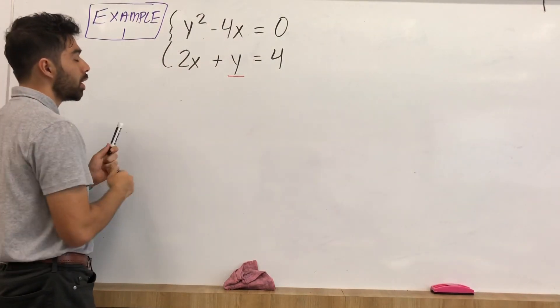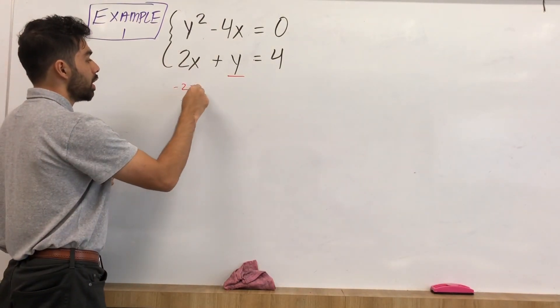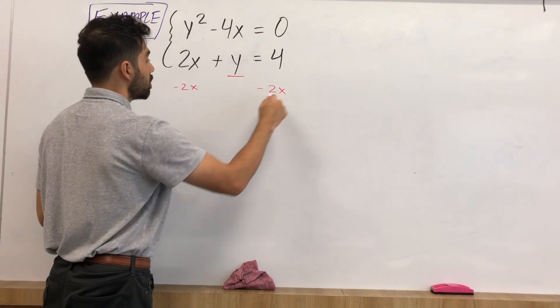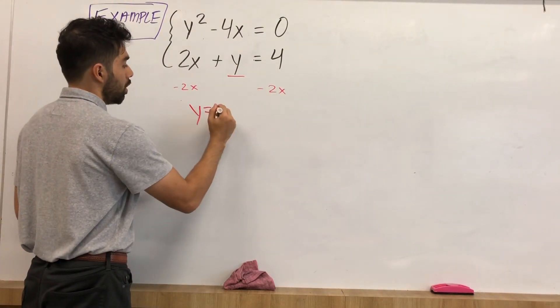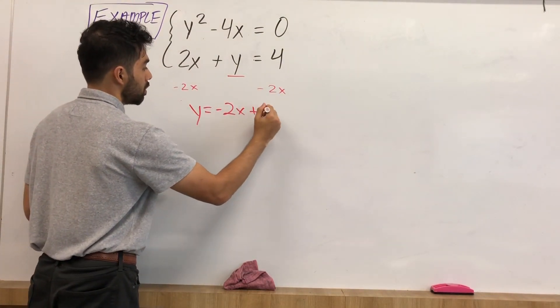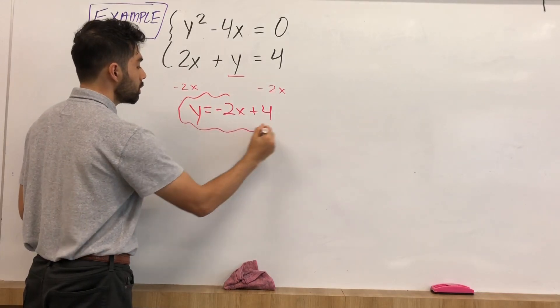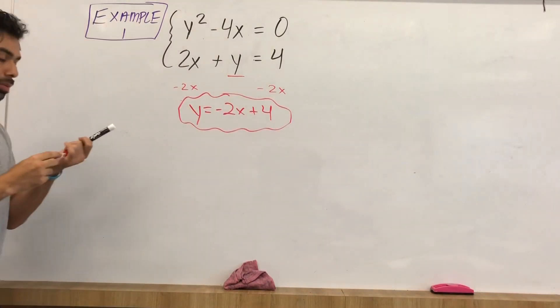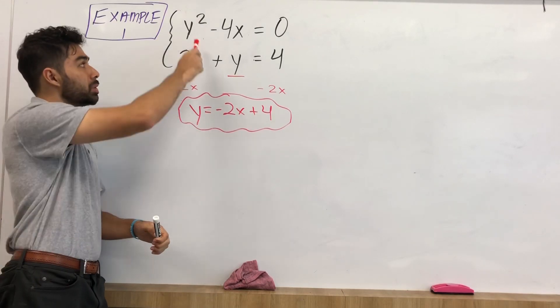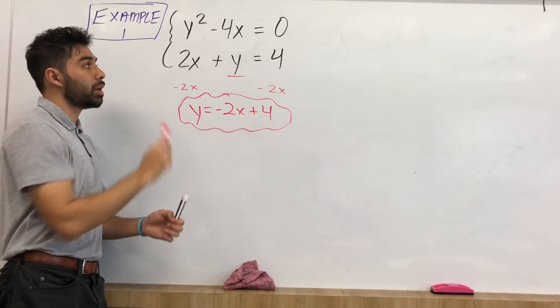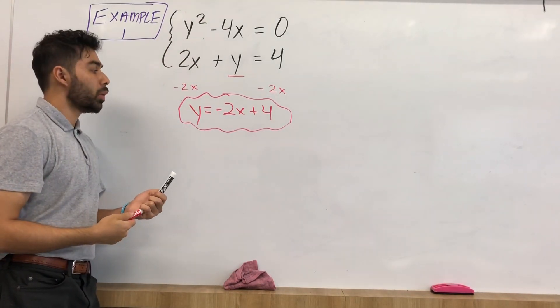Let's go ahead and solve for y. What we have to do is minus 2x minus 2x. Y ends up being negative 2x plus 4. So I know what y is.